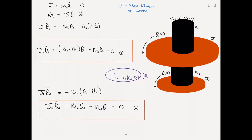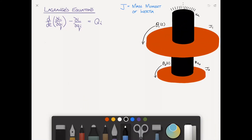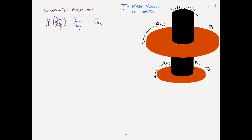I thought I would also look at solving this problem using Lagrange's equation, since everyone seems to ask about that too. So I'm going to repeat this exercise using Lagrange's equations on the next page. I've gone ahead and written Lagrange's equation out. We'll call this number 3 in keeping with our numbering. What remains is for us to find the Lagrangian L, which is equal to the difference between the kinetic energy T and the potential energy V.